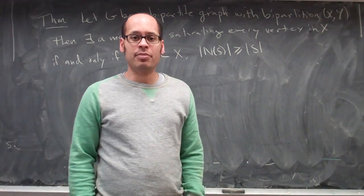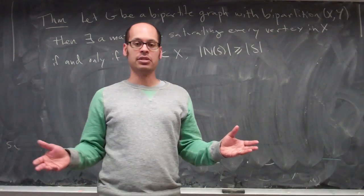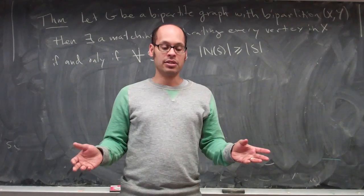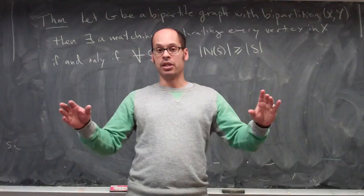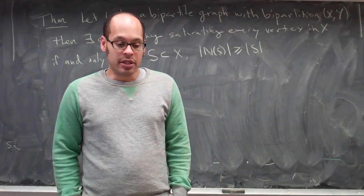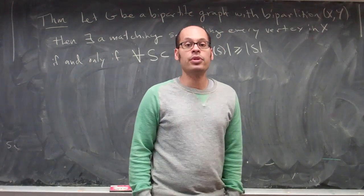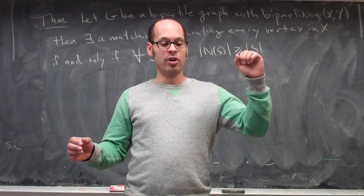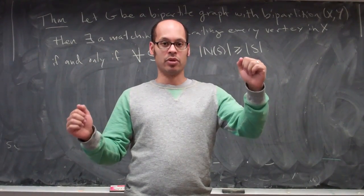Here's how the marriage problem goes. Suppose you have a village with some women and some men, with the same number of women as men. Suppose that each woman knows k men, and each man knows k women, where k is just some positive number. Then the theorem states that in this situation, there is always a way to find a perfect matching — that is, to pair off each woman with exactly one man that she knows, and each man with exactly one woman that she knows.